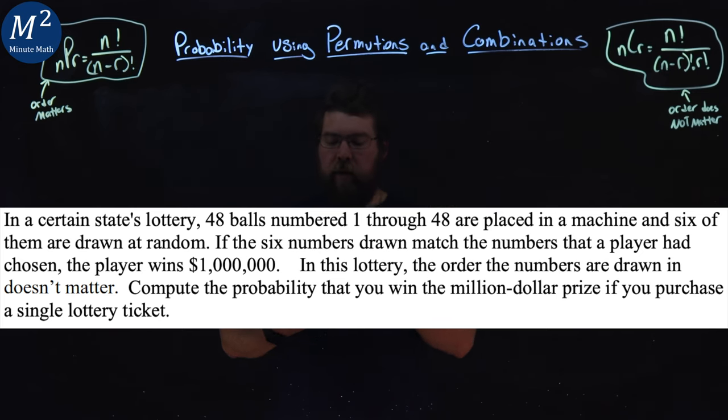In a certain state's lottery, 48 balls numbered 1 through 48 are placed in a machine and six of them are drawn at random. If the six numbers drawn match the numbers that a player had chosen, the player wins $1 million. In this lottery, the order the numbers are drawn in doesn't matter. Compute the probability that you win the million dollar prize if you purchase a single lottery ticket.